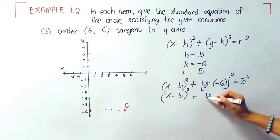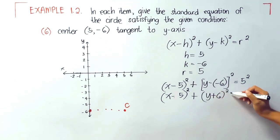Remember that negative times negative is positive, and 5 squared equals 25, so this is our final answer.